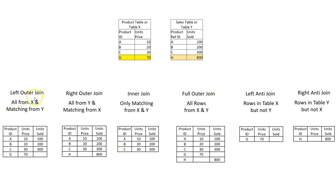Left outer join includes all rows from X and matching rows from Y. All from X means A, B, C, and G. The matching elements between X and Y are A, B, C. Right outer join includes all from Y — that is A, B, C, and H — plus matching rows from X, which are A, B, C. Information for G is not in Y, so that field will be blank.